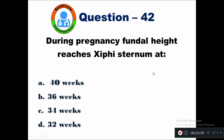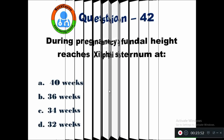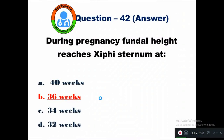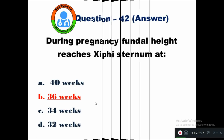Question 42: During pregnancy, fundal height reaches the xiphisternum at — option A 10 weeks, B 36 weeks, C 34 weeks, D 32 weeks. During pregnancy, fundal height reaches the xiphisternum at 36 weeks.